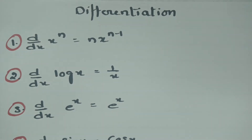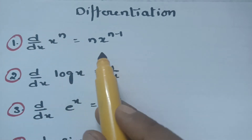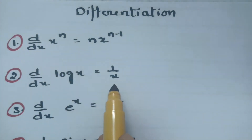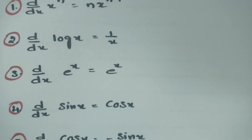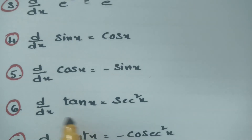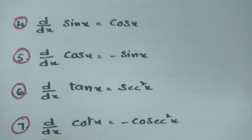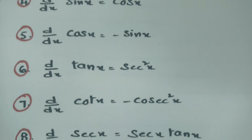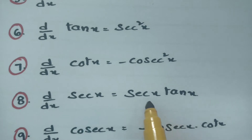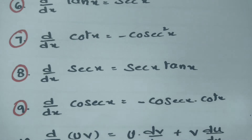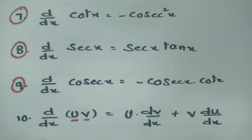As you all know, the derivative of x^n is nothing but n into x^(n-1), and the derivative of log x is 1/x. The derivative of e^x is e^x, sin x is cos x, and cos x is minus sin x. The derivative of tan x is sec²x, and the derivative of cot x is minus cosec²x. The derivative of sec x is sec x·tan x, and the derivative of cosec x is minus cosec x·cot x.